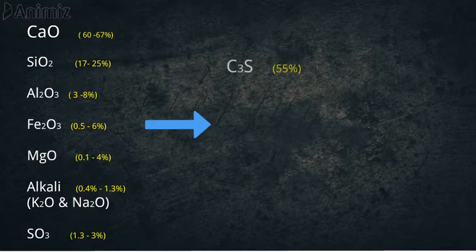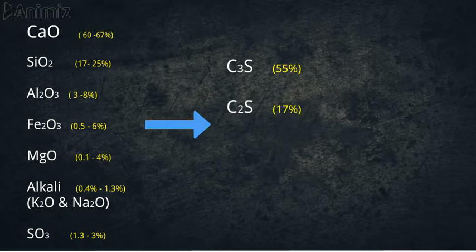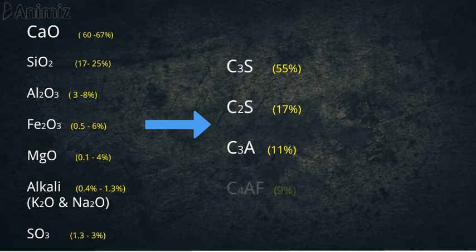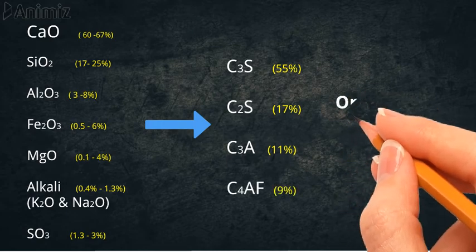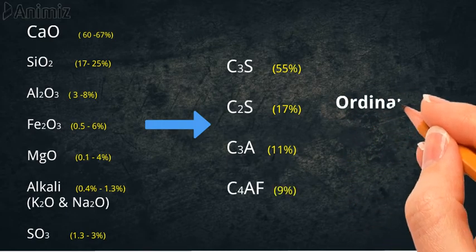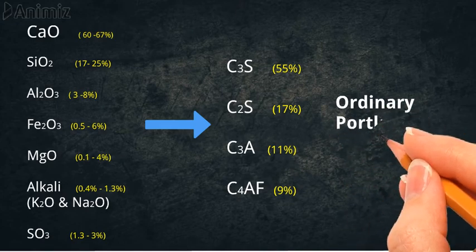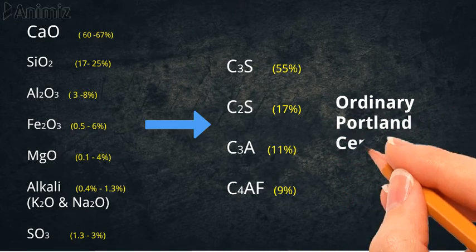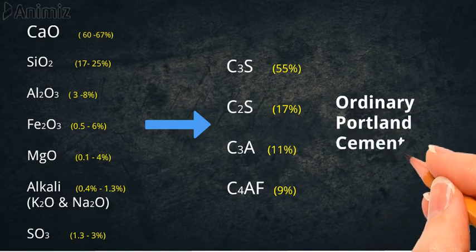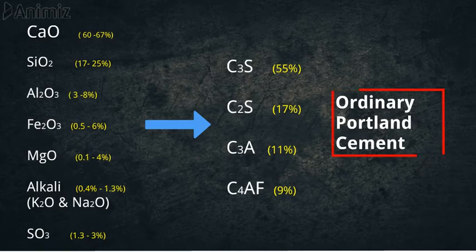These together during the process form the Bogue compounds: 55% of tricalcium silicate, 17% of dicalcium silicate, 11% of tricalcium aluminate, and around 9% of tetracalcium aluminoferrite. These Bogue compounds together are known as Ordinary Portland Cement.